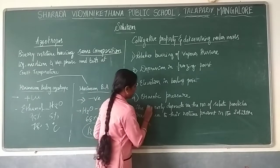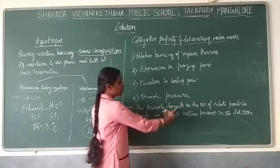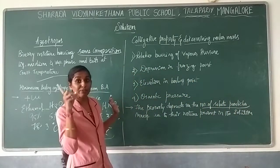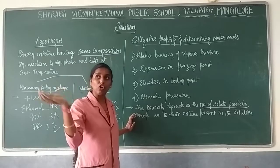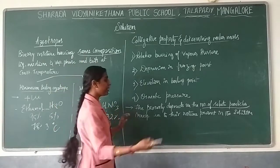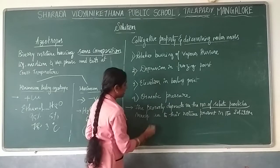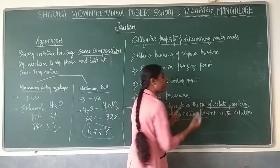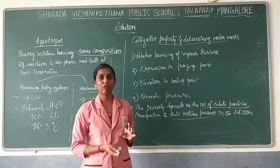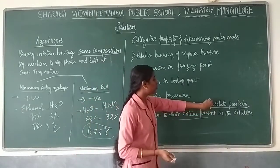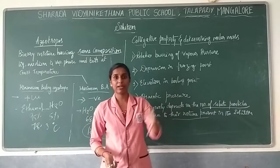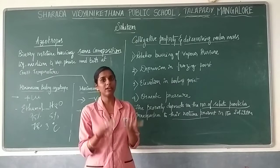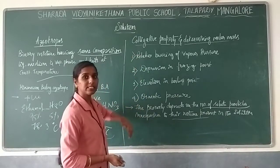Colligative property is the property which depends on the number of solute particles — not the solvent — irrespective of their nature. It does not matter what kind of particle it is; it only matters how many solute particles are present. Based on the number of particles, we can determine how vapor pressure changes.